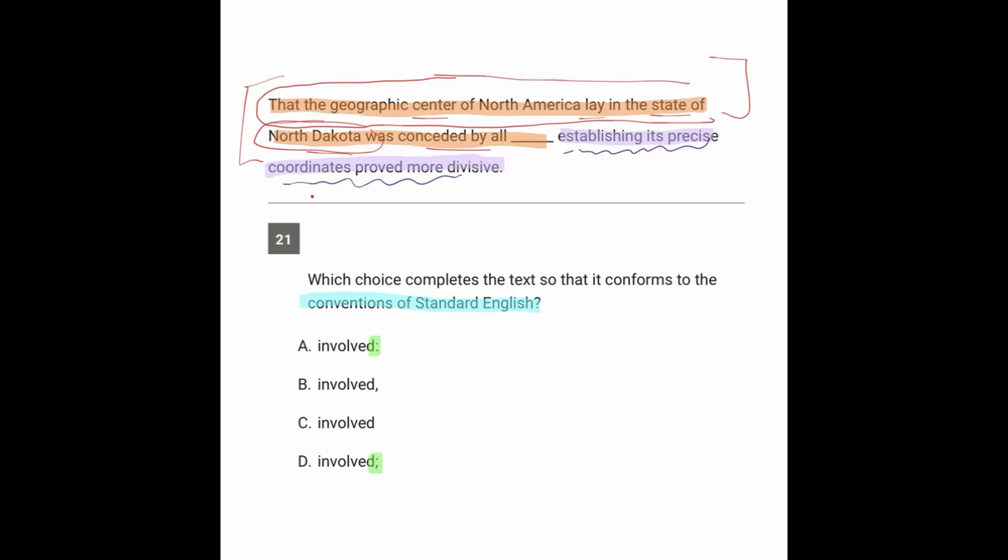That's kind of saying, this thing was conceded by all. And what is this thing? It's the idea that the center of North America lay in North Dakota, or the way they put it, that the center of North America lay in North Dakota.